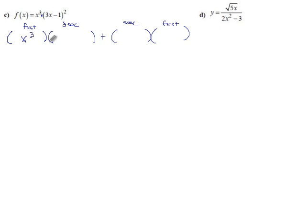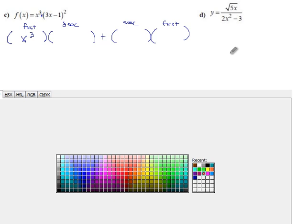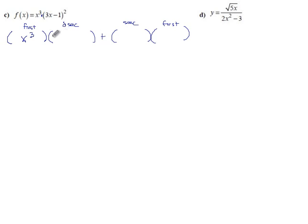The derivative of the second piece—here's where the chain rule kicks in. Out comes the red and we do 2 times 3x minus 1 to the first times 3. That's the derivative of the inside part. First, you see this as something squared, and so you do 2 times something to the first.